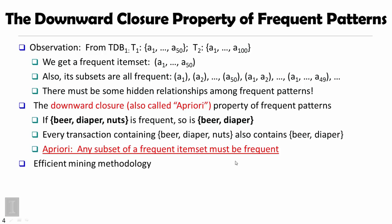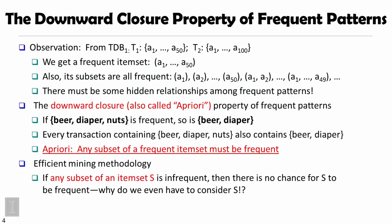In that context, we can derive an efficient mining methodology. The general philosophy is this: if you find an itemset S and any of its subsets is infrequent, then there's no chance for S to become frequent. Based on the Apriori property, we do not even have to consider mining S. This actually turns out to be a sharp knife for pruning.